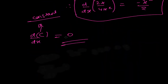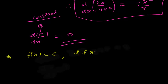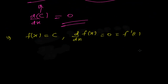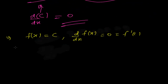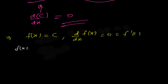I told you that the derivative of a constant function is zero. Let me do a small example to make this more clear. Suppose f(x) equals C, a constant — then the derivative f'(x) equals zero. That's simply what I want to say. Now let me take a small function.